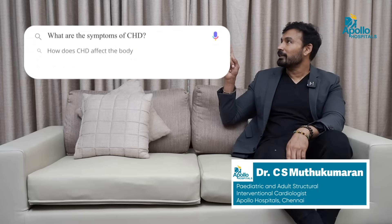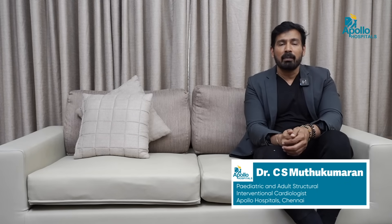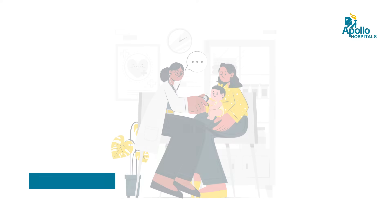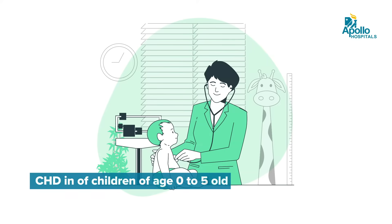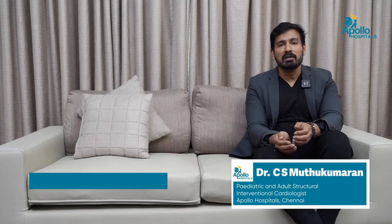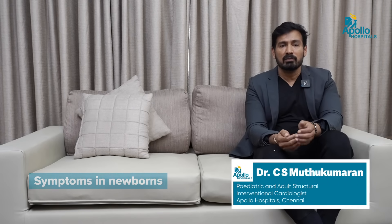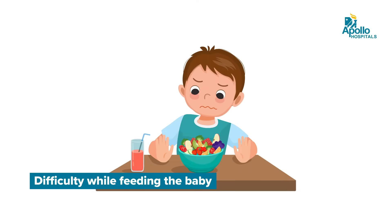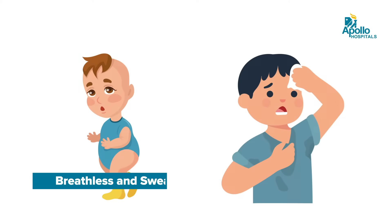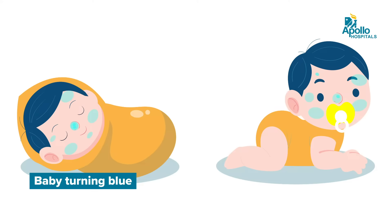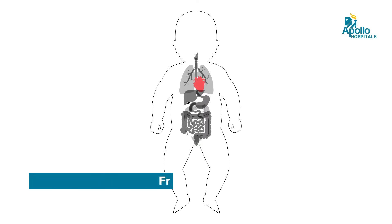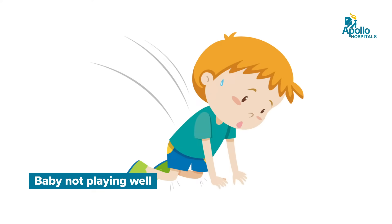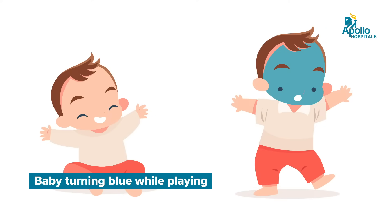What are the symptoms of CHD? Congenital heart defects can present at different ages — at birth, 0 to 5 years, or more than 10 years old. For a newborn baby, the most challenging task is feeding, so the baby will have difficulty feeding, be breathless while feeding, have profuse sweating, and some babies can turn blue. For children aged 0 to 5 years, they can get frequent chest infections, will not be able to play well, feel breathless while playing, turn blue while playing, and occasionally complain of chest pain.